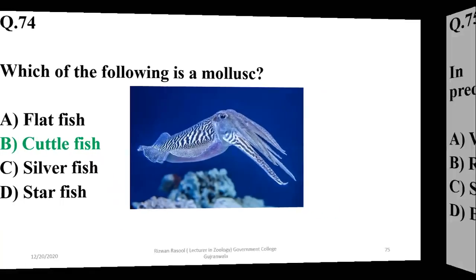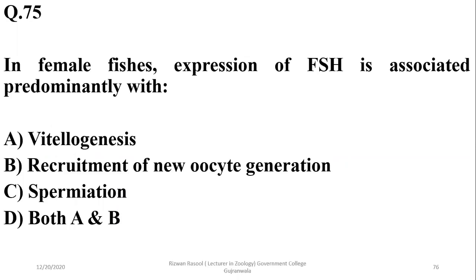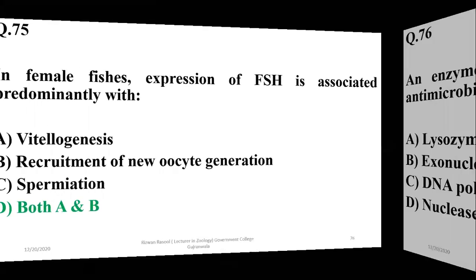Question 75: In female fishes, expression of FSH is associated primarily with vitellogenesis as well as recruitment of new oocyte generation. So D seems the right option.